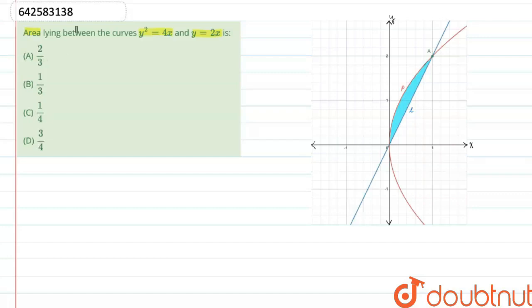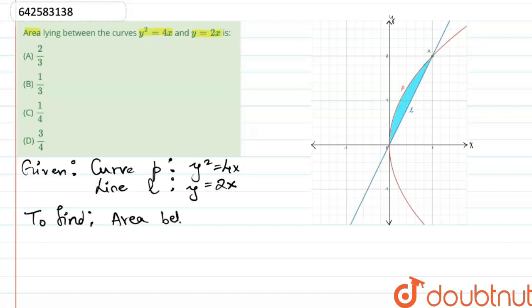We are given a curve P defined as y² = 4x and the line L defined as y = 2x. We are supposed to find the area between the curve P and the line L.